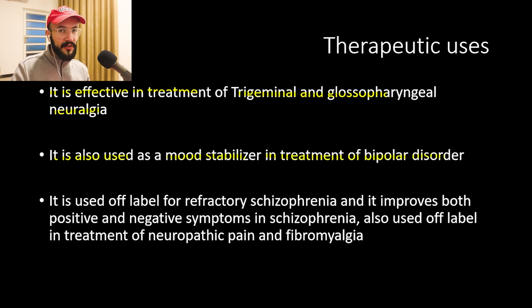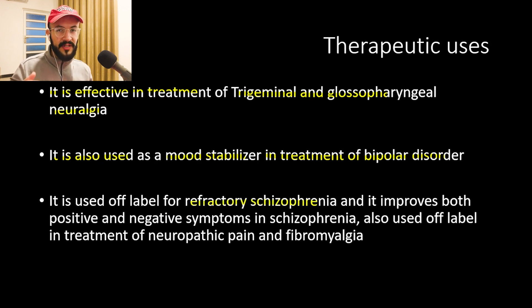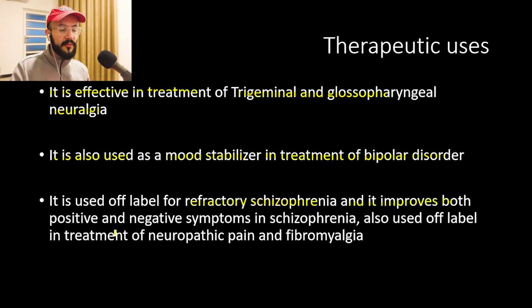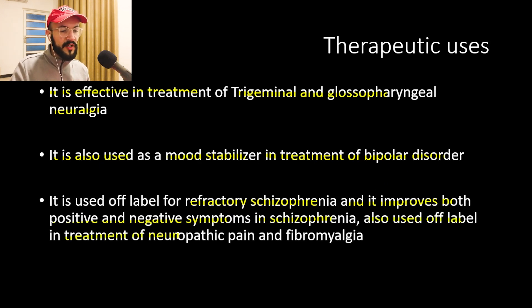All of the already mentioned therapeutic uses are FDA approved. The non-FDA approved uses include refractory schizophrenia — when all other lines of treatment have failed — where there is evidence that carbamazepine improves both the positive and negative symptoms. It is also used off-label in treatment of neuropathic pain and fibromyalgia.